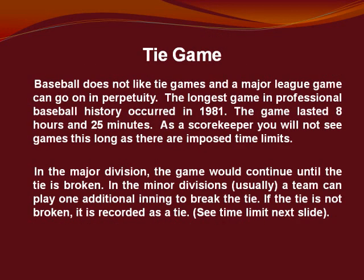Let's talk about tie games. Baseball does not like tie games, and a major league game can go on in perpetuity. The longest game in professional baseball history occurred in 1981 and lasted eight hours and 25 minutes. As a scorekeeper, you will not see games this long, as there are imposed time limits. In the major league divisions, the game would continue until the tie is broken. In the minor division, usually a team can play one additional inning to break the tie. If the tie is not broken, it is recorded as a tie in the scorebook. See time limits on the next slide.